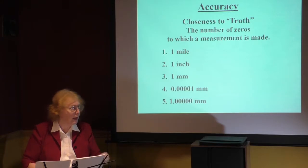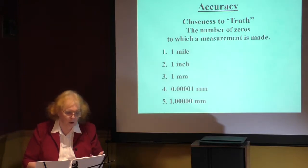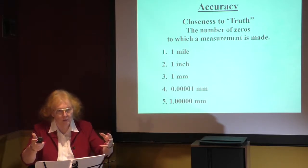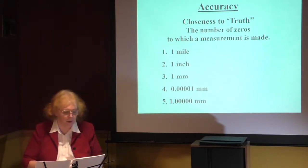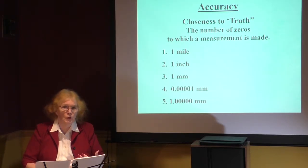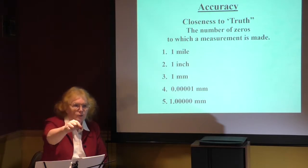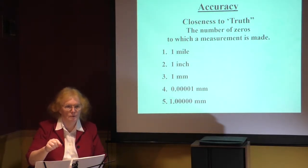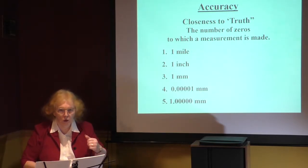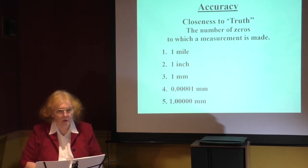Accuracy is closeness to the truth. There is a truth out there, and we're trying to measure it. Essentially, we're saying how many decimal places are you carrying out that measurement. For instance, what would happen if I said let's measure the coastline of the United States and put a peg in every mile? Well, we'll miss the inlets, miss peninsulas, we'll be cross-cutting. This would not be a good, accurate measure. It will be accurate only to one mile.